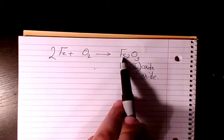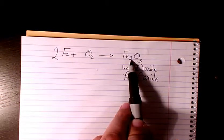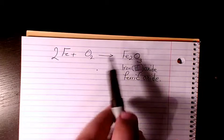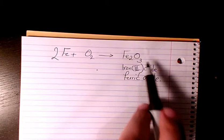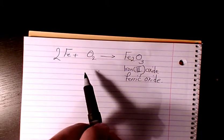But for oxygen, on the product side we have three of them, and on the reactant side we have two of them.